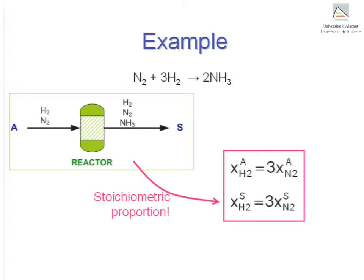Since the reactants will always be consumed in the reactor in stoichiometric proportion, if the reactants in stream A are fed to the system in stoichiometric proportion, then what reactants remain in stream S must also be in stoichiometric proportion.